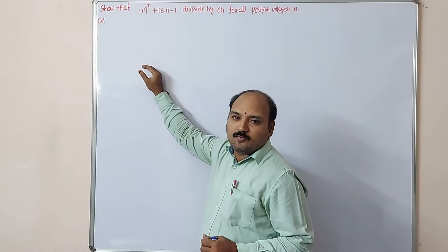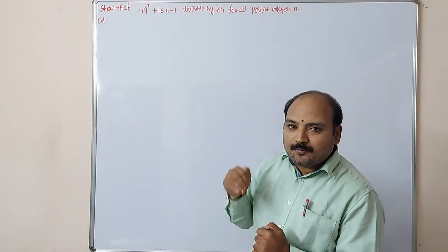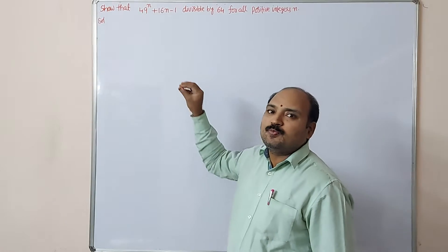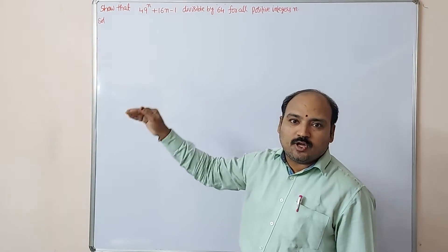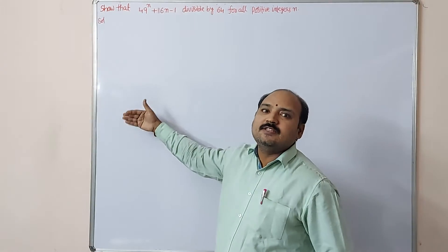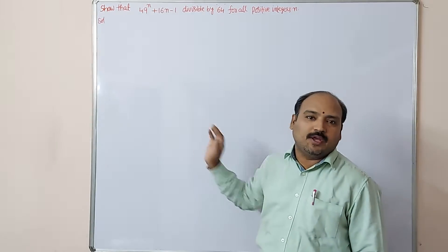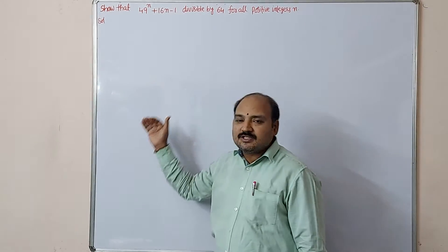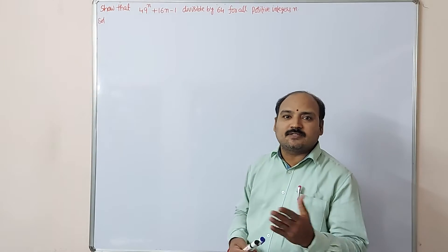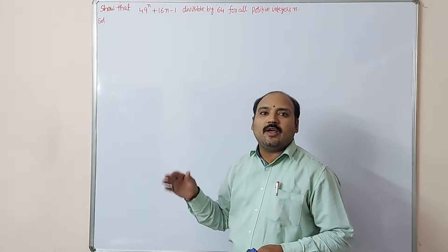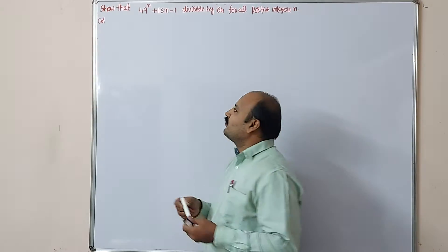After that, three important steps are there: Step 1, Step 2, Step 3. In Step 1 we have to prove the given statement is true for n is equal to 1. In Step 2, assume that the given statement is true for n is equal to k. In Step 3, we are going to prove the given statement S of n is true for n is equal to k plus 1.